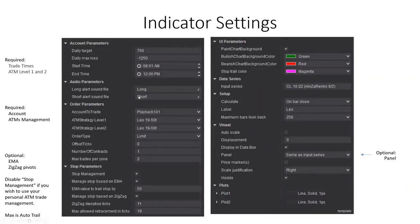For long and short signals, if you want sound you can turn those on and put any sound file in there. The account defaults to SIM — you can change it to playback or another account. The ATM strategy needs to be assigned; that's where it gets its logic from. Once you figure out what you want in there, it'll run, but if there's no ATM strategy assigned, it won't work.